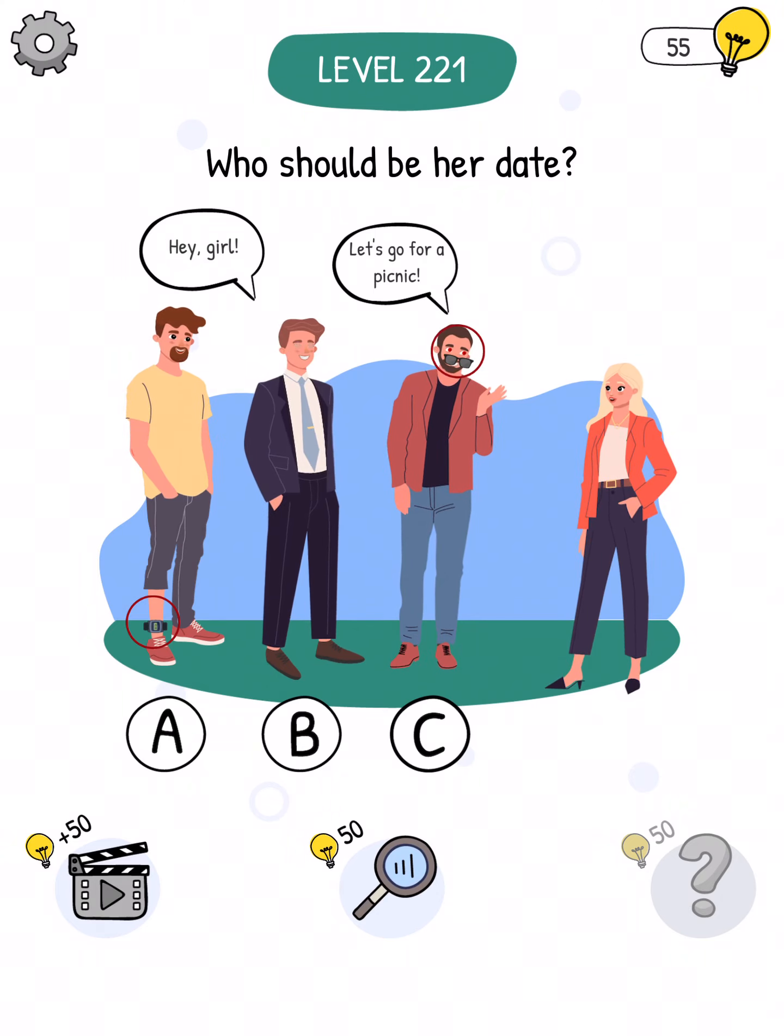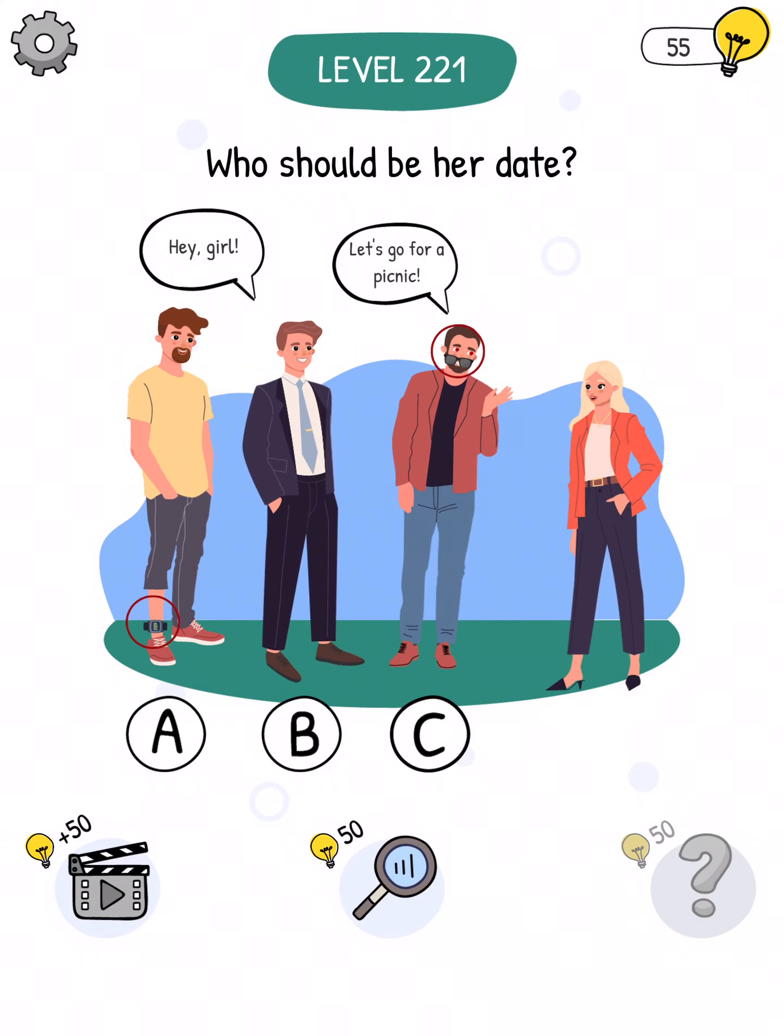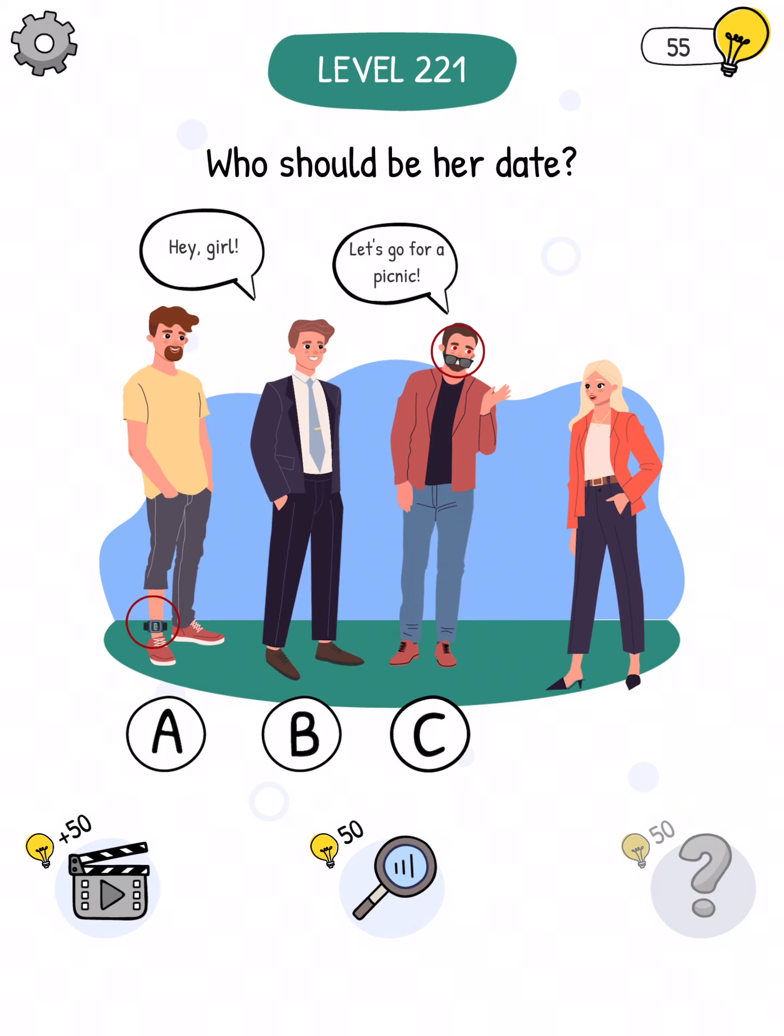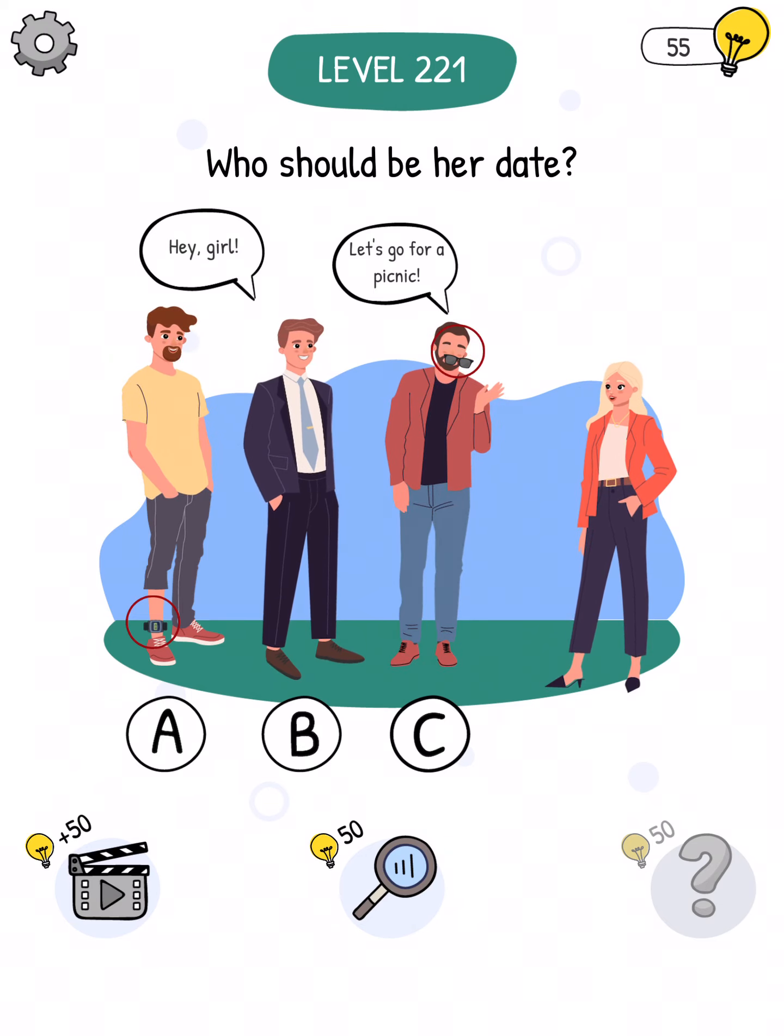So I have to reveal the eyes by removing the sunglasses. Reveal the ankle bracelet by, but you got to click on them also. It's not enough to reveal them. Okay, so now I'm going to say B.